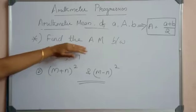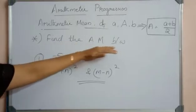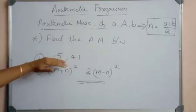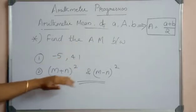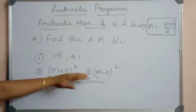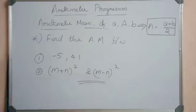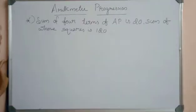Now you can find the arithmetic mean between minus 5 and 41, and between (m + n)² and (m − n)².